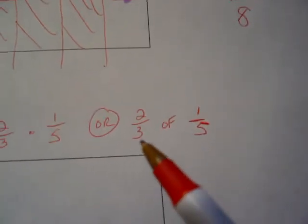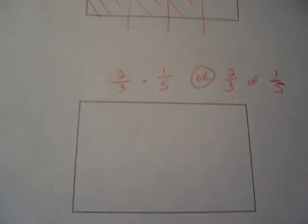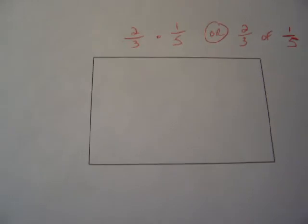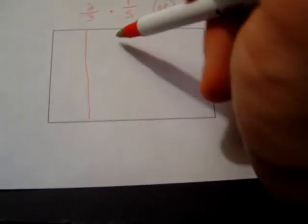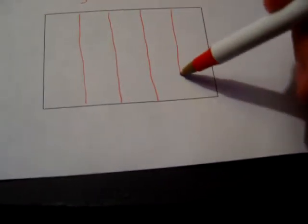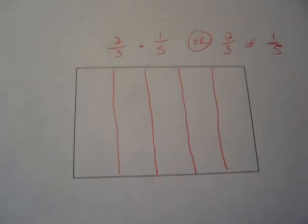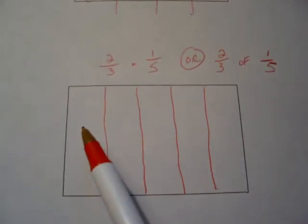2 thirds of what? 2 thirds of 1 fifth. Let's start with 1 fifth. Take our rectangle, which is a whole or pan of lasagna, and we're going to try to make it into 5 equal pieces or fifths. Okay? Please excuse my inaccuracy if I don't end up with 5 equal pieces. I'm going to try my best here. Okay? They're not quite equal, but you get the point. They should be.